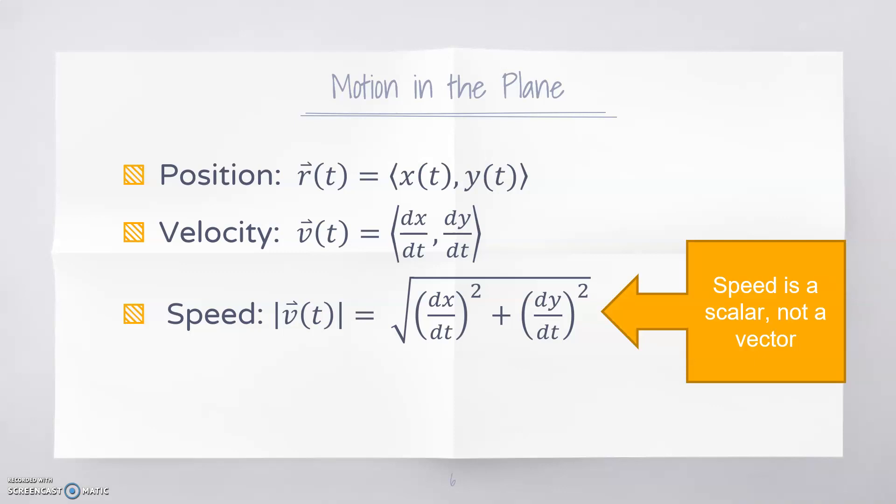Velocity tells you direction of travel—right, left, up, down—and speed just tells you how fast you're going. Speed is going to combine your x and y velocity and figure out how fast your particle is traveling just as a number.